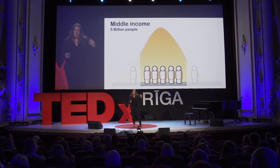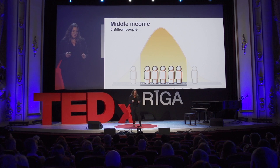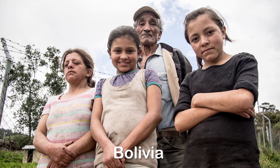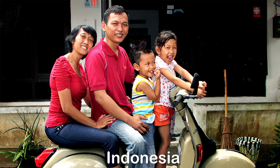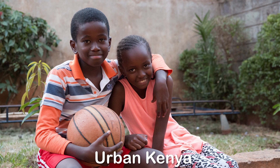But what about the middle income, where we have five billion people — most of the people? I know it's a rough thing to generalize five billion people, so you have to bear in mind that this group is quite broad. But it's neither the extremely poor nor the extremely rich. Here, a family in Bolivia, a family in Indonesia, a family in Tunisia, a family in urban Kenya.